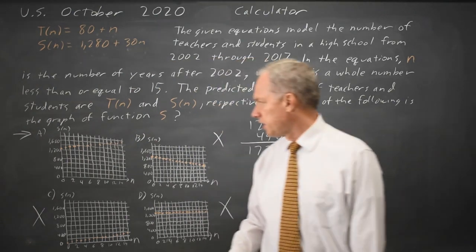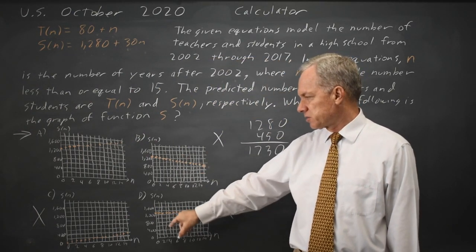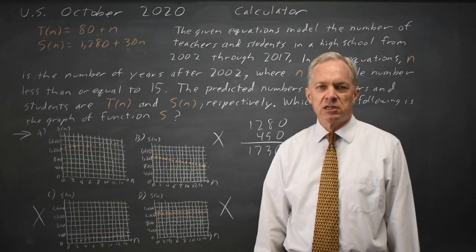Our answer would be A because B has a negative slope, D has zero slope, and C has the wrong intercept.